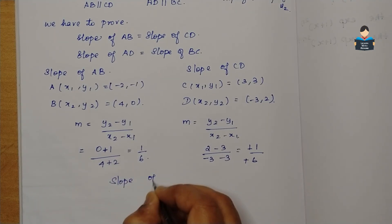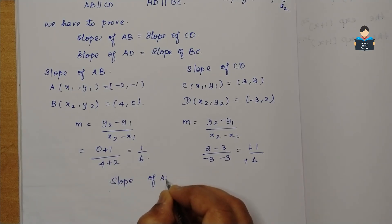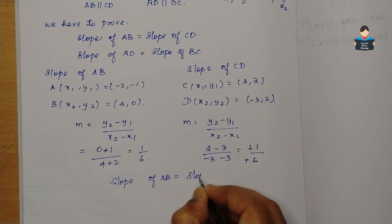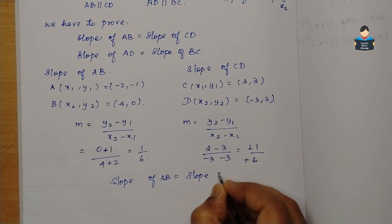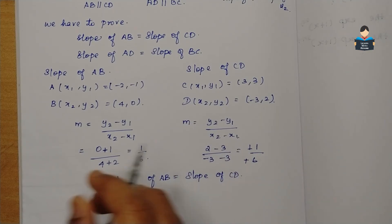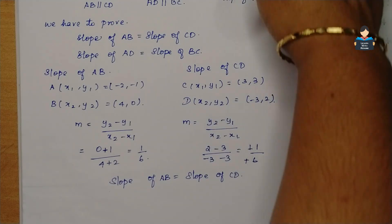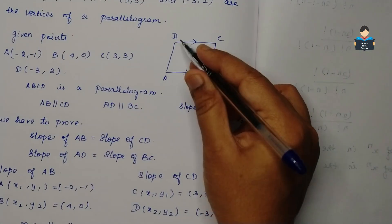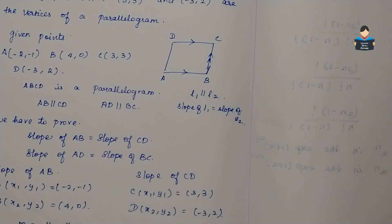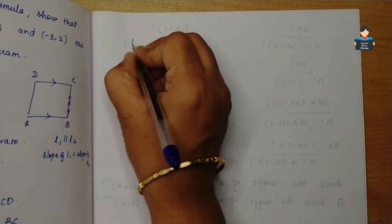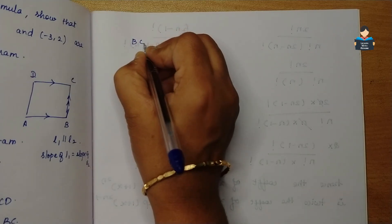Slope of AB is equal to slope of CD. Now the next part: BC is parallel to AD, so now we prove it. BC is equal to AD.